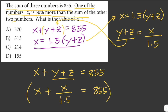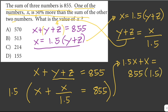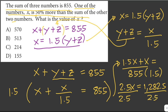We multiply both sides by 1.5. We have 1.5x plus x equals 855 times 1.5. Then 1.5x plus x is just equal to 2.5x, and 855 times 1.5 is 1,282.5. We divide both sides by 2.5 and solve for the value of x. So x is just equal to 513. Our answer here is letter B, 513.